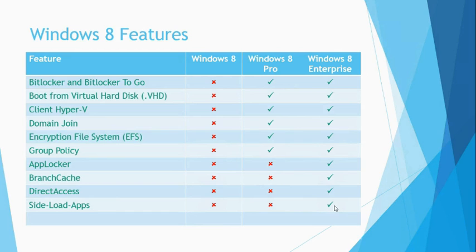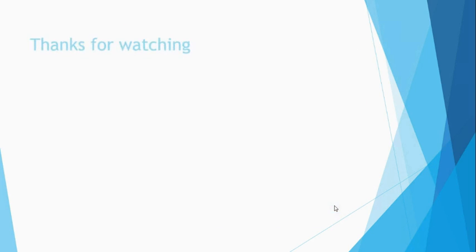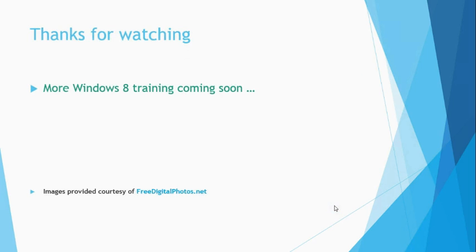The final feature when comparing Windows 8 editions is Windows To Go, a brand new feature for Windows 8. It allows you to store a full working copy of Windows 8 on a portable USB flash drive. You can simply slot the USB flash drive into any computer, boot to it, and access your Windows 8 environment — though the computer must support booting from USB flash drives. Windows To Go is only available for the Windows 8 Enterprise Edition. That covers Windows 8 editions — thanks for checking out this free Windows 8 lesson, and thanks for watching.